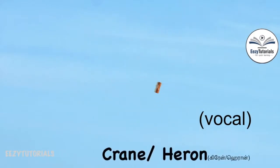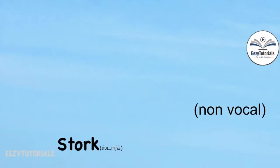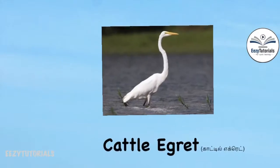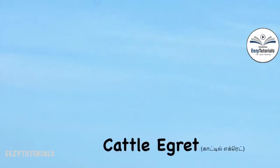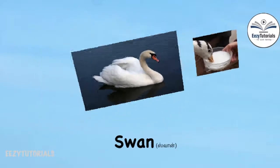This bird stands on a single leg — Crane or Heron. This bird also stands on a single leg but is non-vocal — Stork. This bird is similar to a crane but with a long neck — Cattle Egret.